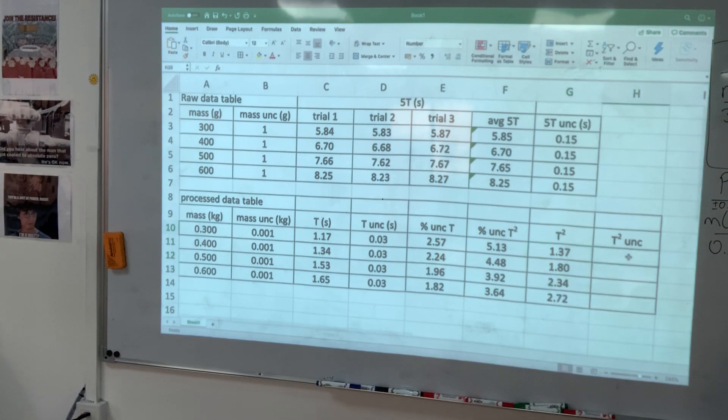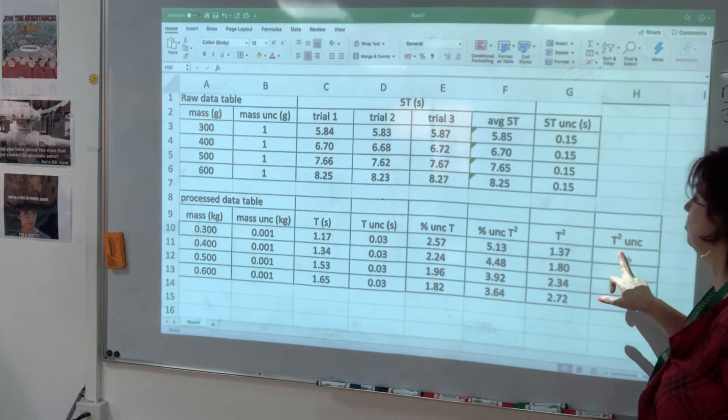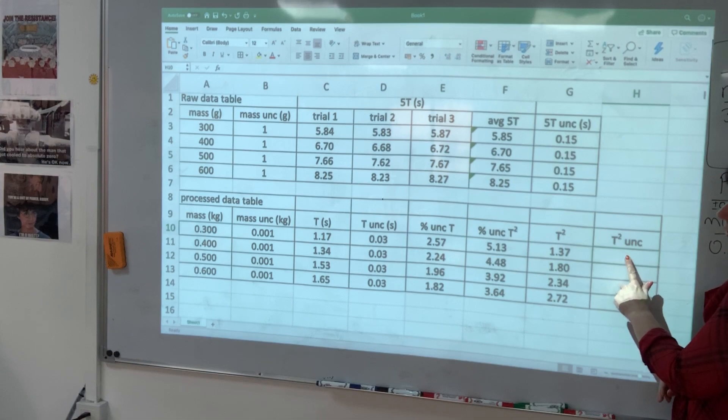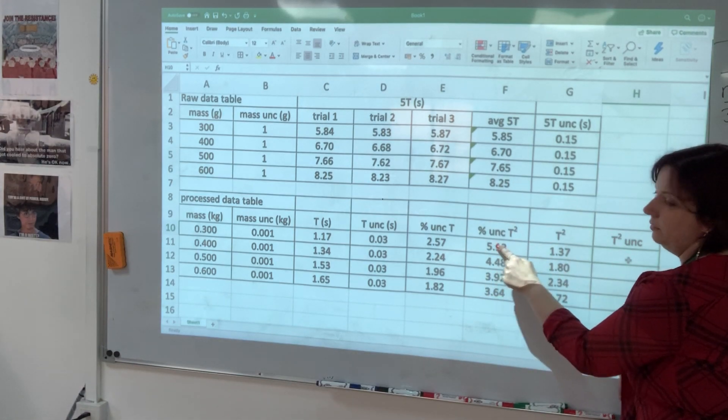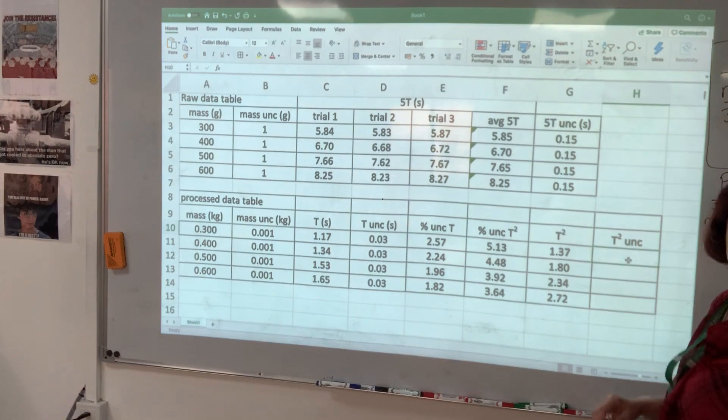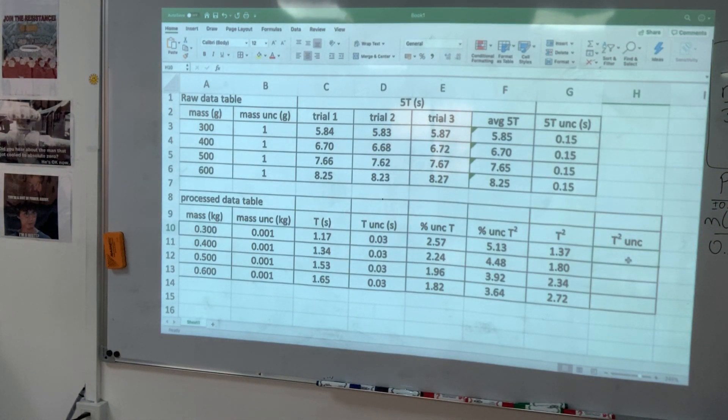Now for the percent uncertainty of T squared, I want that percent of that number. So I'm going to type in what you would do if you were actually calculating this. Tell Excel you're making a calculation. Take that number, multiply it by that number, put it in parentheses, divided by 100. That's your absolute uncertainty.